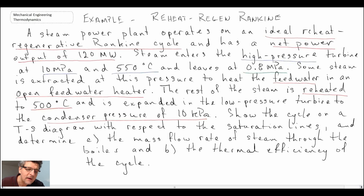The things they're asking us to find in solution to this problem: first, write it out on a T-S diagram with respect to saturation lines, which is always good practice. Next, find the mass flow rate of steam through the boiler. And last, the thermal efficiency of the cycle. That's the example problem we have before us. We'll begin by writing out the pertinent information and then do the process diagram as well as the process schematic.